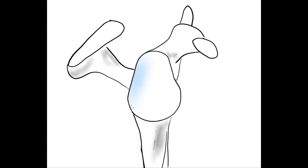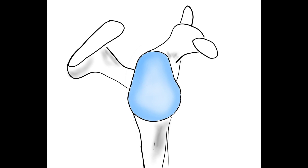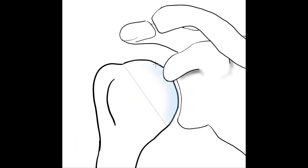The glenohumeral joint is of the ball and socket type. The glenoid fossa is covered with cartilage that is thicker in the periphery and thinner in the center, as also seen in a transverse view. As for the humerus, the head is covered with cartilage that is thicker at the center and thinner at the periphery, distributed so that it is complementary to the glenoid fossa.